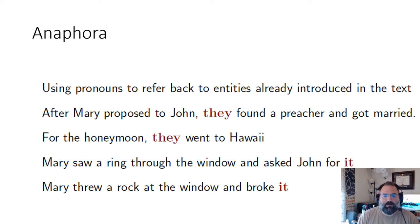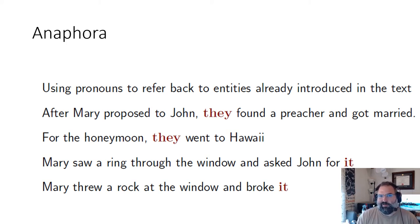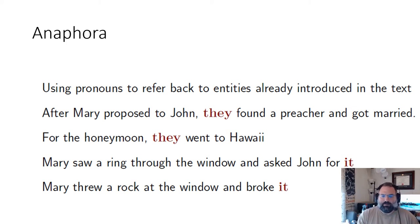Another challenge is anaphora — we use shortcuts when communicating because otherwise language becomes very cumbersome. 'After Mary proposed to John, they found a preacher and got married' — 'they' is Mary and John. Rather than repeating their names, we use 'they' as a shortcut, but knowing who 'they' refers to can get challenging, especially when it spans great distances within the text. 'For the honeymoon, they went to Hawaii' — we assume it's Mary and John, not Mary, John, and the preacher. 'Mary saw a ring through the window and asked John for it' — 'it' being the ring. 'Mary threw a rock at the window and broke it' — we assume 'it' is the window. These shortcuts can be very challenging for a program to address.